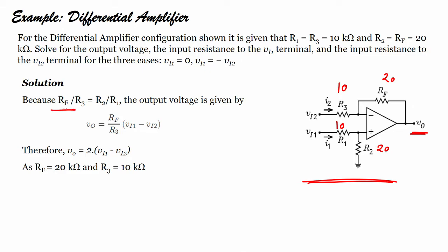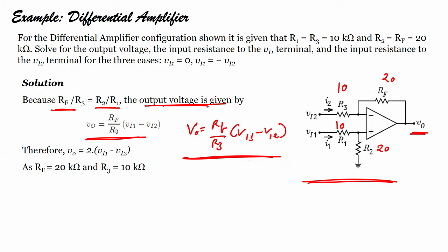Because Rf/R3 equals R2/R1, the output voltage is given by Vo equals Rf/R3 into (Vi1 minus Vi2). Substituting the values: 20 divided by 10 equals 2, so Vo equals 2 times (Vi1 minus Vi2).